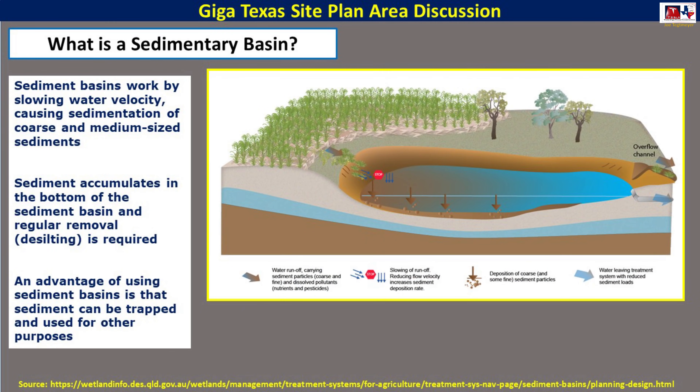A sedimentary basin is an area that slows water velocity and allows sedimentation of coarse and medium-sized sediments. That sediment over time will build up and will need to be removed, but an advantage is that the removed material can be used elsewhere around the site. As you can see by this illustration, the water runoff comes in, it slowly sediments out, and then the water is allowed to leave through an overflow channel.